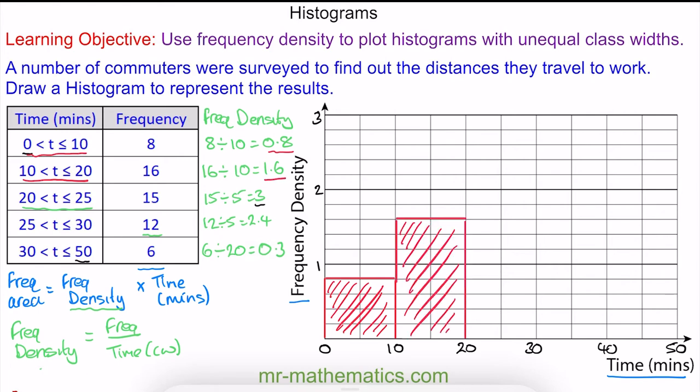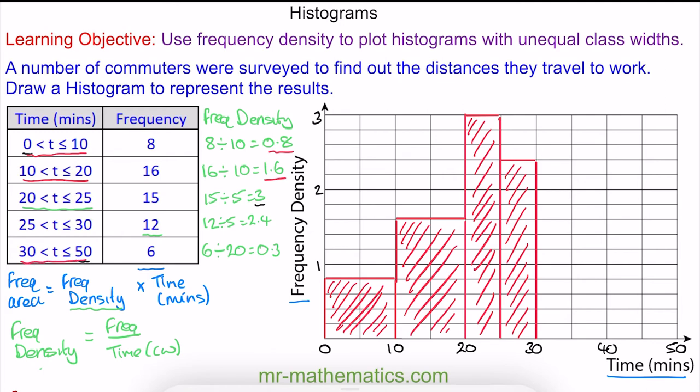Next we go from 20 to 25 with a frequency density of 3, and then from 20 to 30 with a frequency density of 2.4. Finally, from 30 to 50 with a frequency density of 0.3. Here we have our completed histogram for this grouped data table.